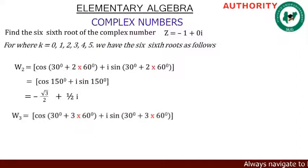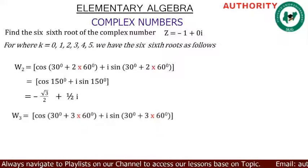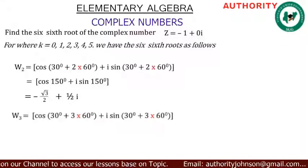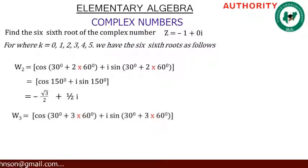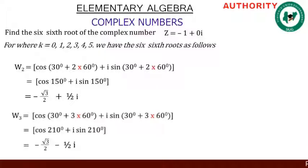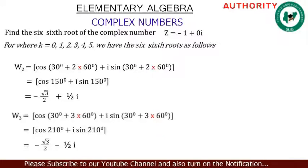For k = 3: w₃ = cos(30 + 3·60°) + i·sin(30 + 3·60°). Three times 60 = 180, and 180 + 30 = 210°. So cos(210°) + i·sin(210°). cos(210°) = -√3/2, and sin(210°) = -1/2, giving w₃ = -√3/2 - 1/2·i.